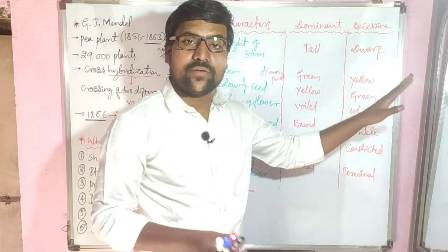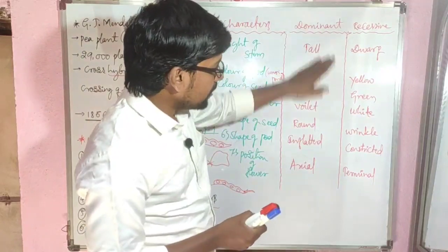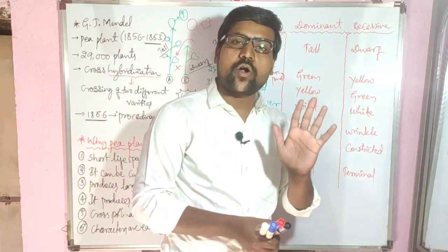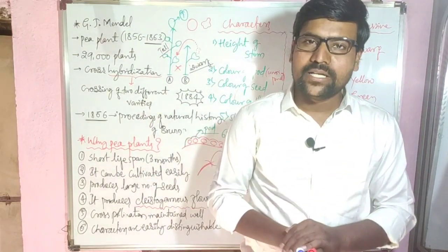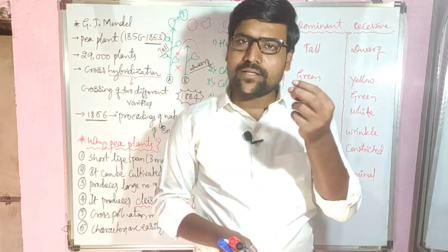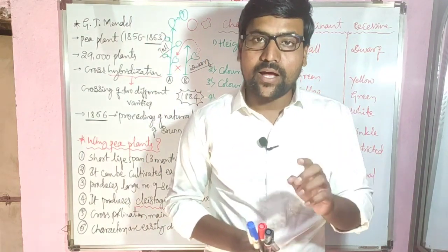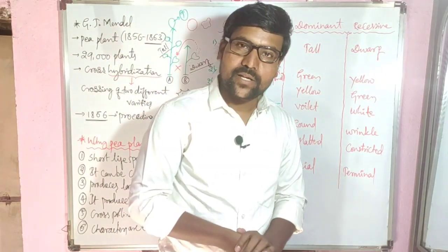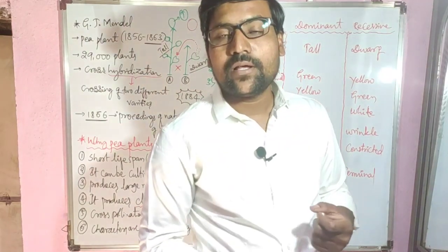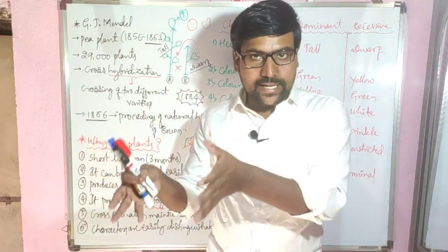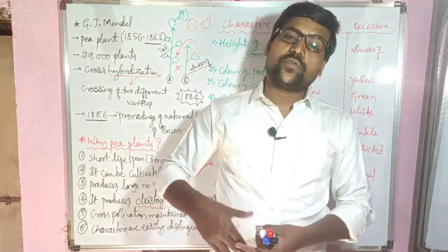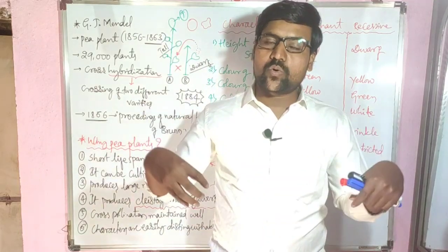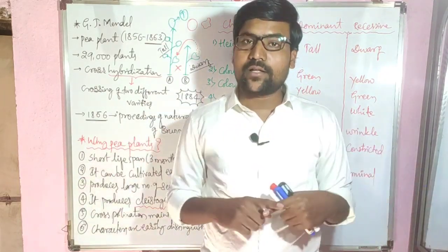So like this, Mendel studied seven characters, meaning fourteen contrasting forms total — seven dominant and seven recessive. Each character has a dominant form and a recessive form. Using these seven characters, Mendel conducted monohybrid crosses and dihybrid crosses, and from those he obtained ratios, rules, and laws.